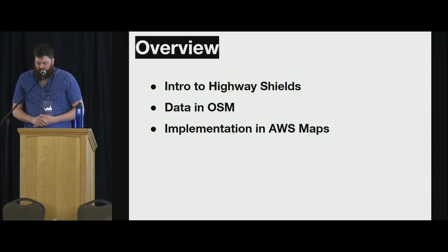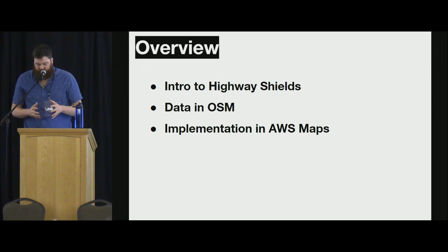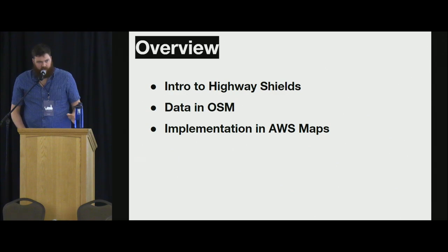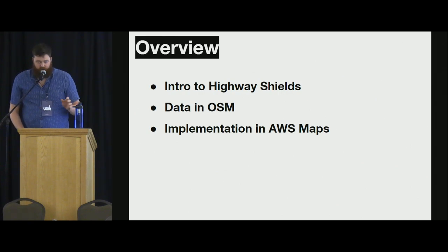I'm going to talk a little bit about Highway Shields, what they are, a little bit of their history, and in OSM what the data looks like, and then how we've leveraged this data in some maps for Amazon Web Services. It will get a little bit more web map centric by the end, but the data overview will still translate to any way that you're making maps with this data.